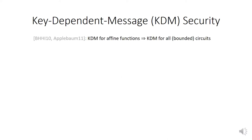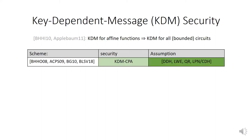Let me present the state-of-the-art for key-dependent message security of encryption. The first important result is an amplification theorem: to achieve KDM security for any function described by a bounded-size circuit, it is sufficient to prove KDM security for a much more restricted class of functions, namely affine functions. And there exist KDM-CPA secure encryption schemes for affine functions, buildable from pretty much any assumption that gives public key encryption, such as DDH, LWE, quadratic residuosity, LPN, or CDH.